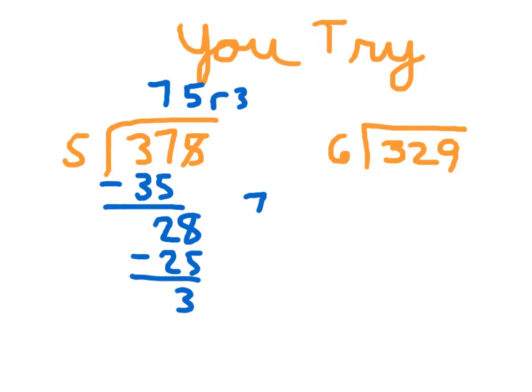3 is our remainder. Our check would be 75 times 5 plus that 3, which is 378. And that's our check.